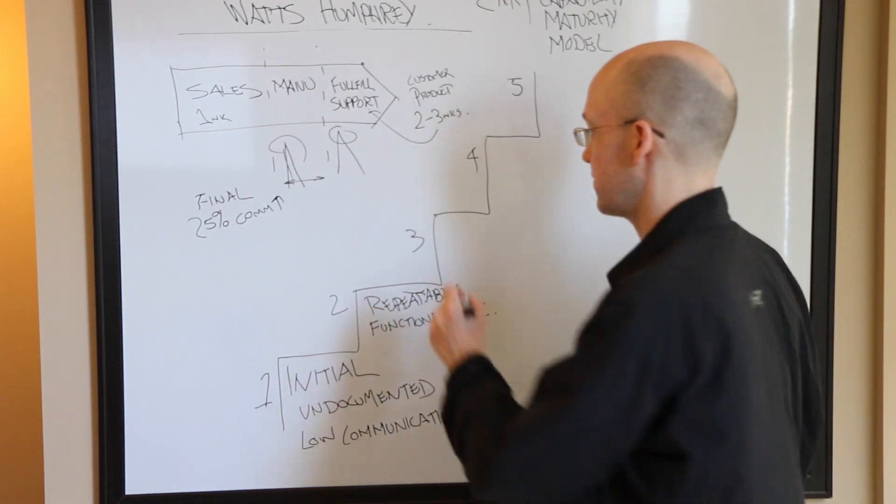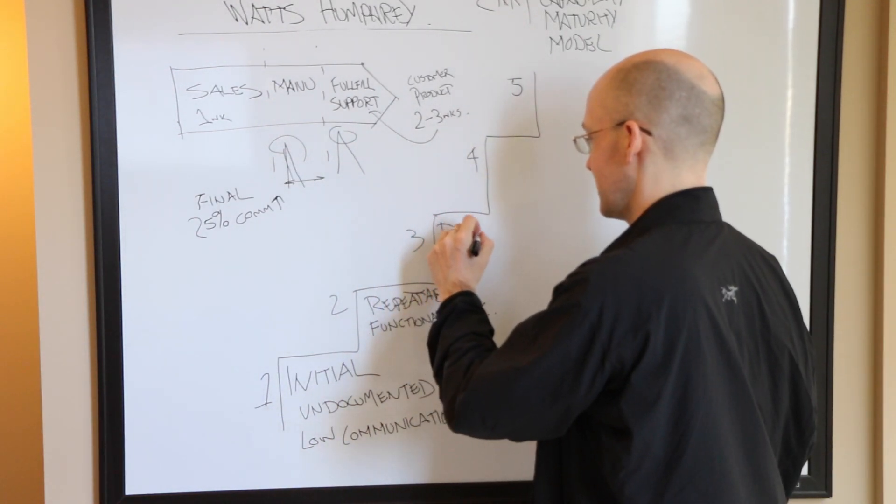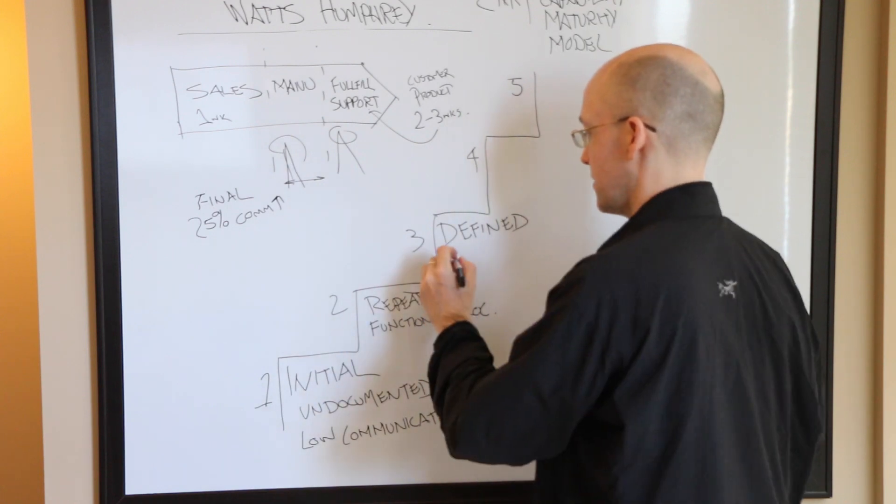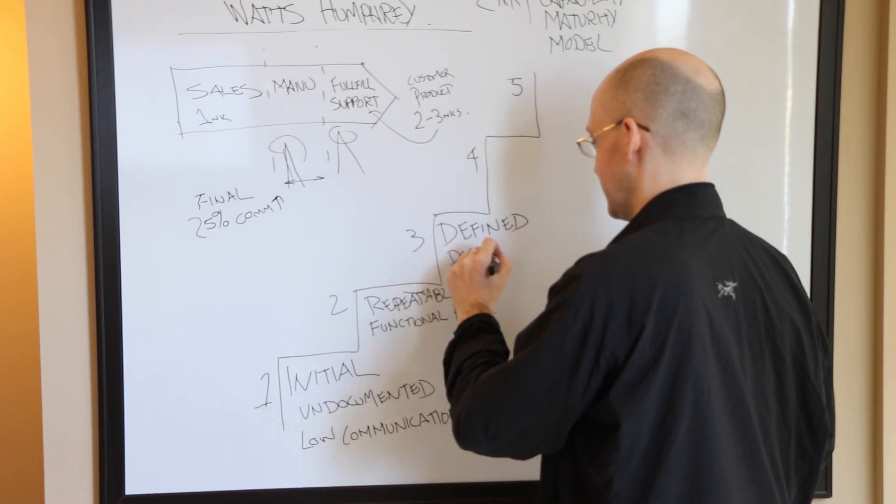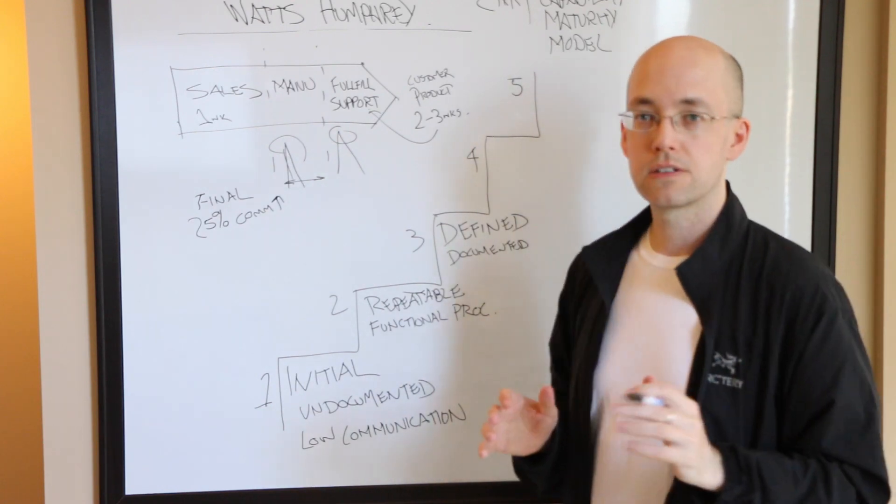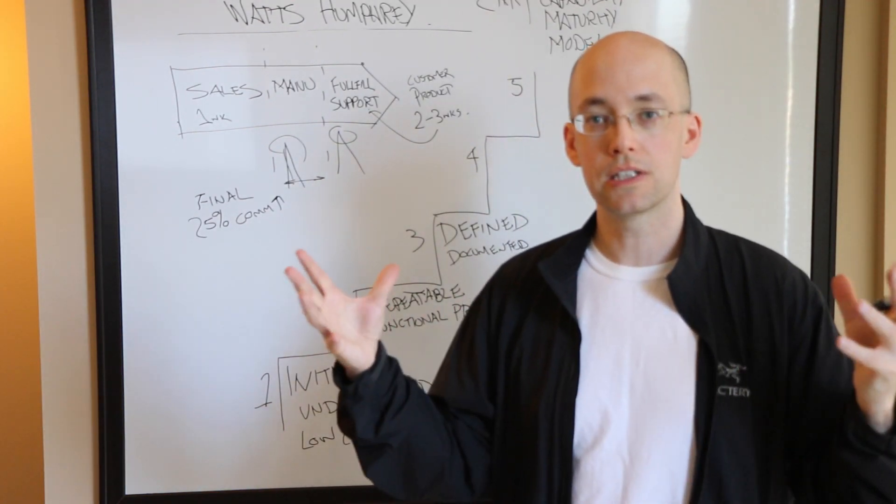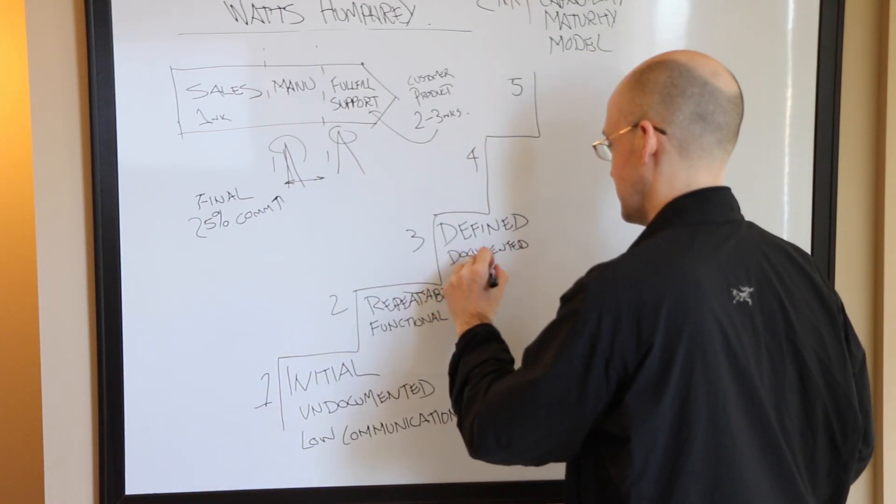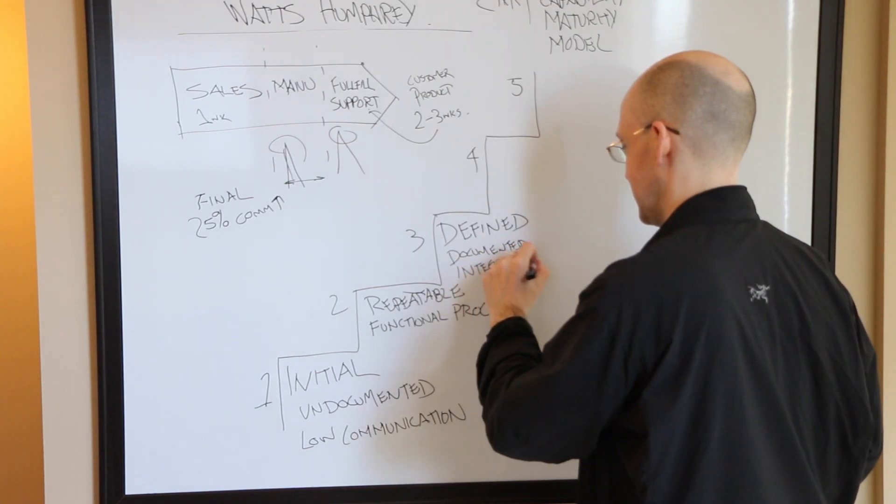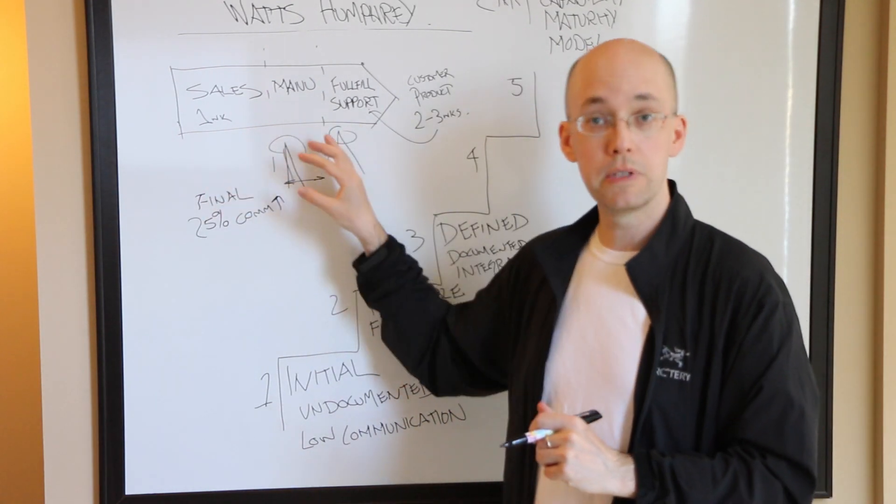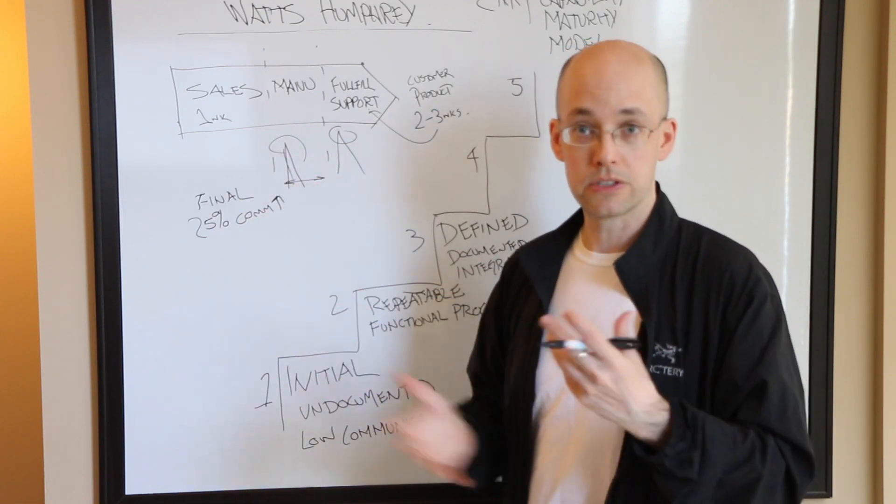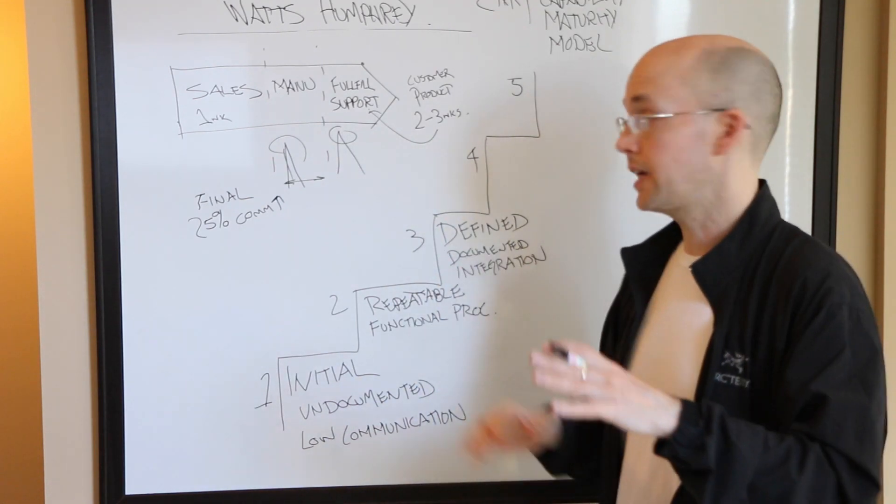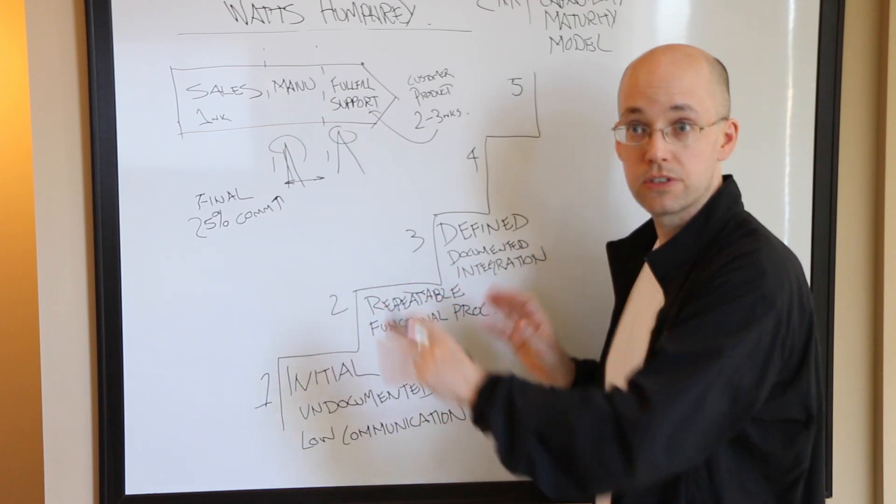That moves us into defined, Level 3. Our processes are now documented, and not only are they documented, we may have some degree of integration of those processes. Now these areas of the business are talking to each other and they're rectifying the problems to build a better experience for the customer.